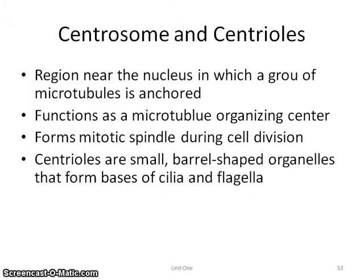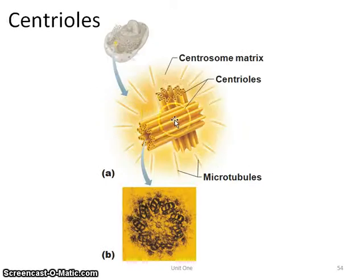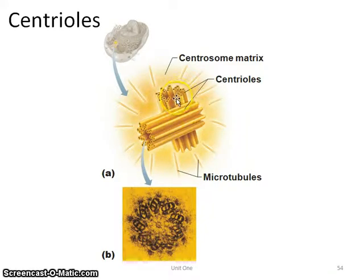The next two organelles — centrosomes and centrioles — are important for cell division. They look like little groups of rods, and as the cell starts to divide, the centrioles split apart from each other and provide a polar attraction within the cell before it splits.